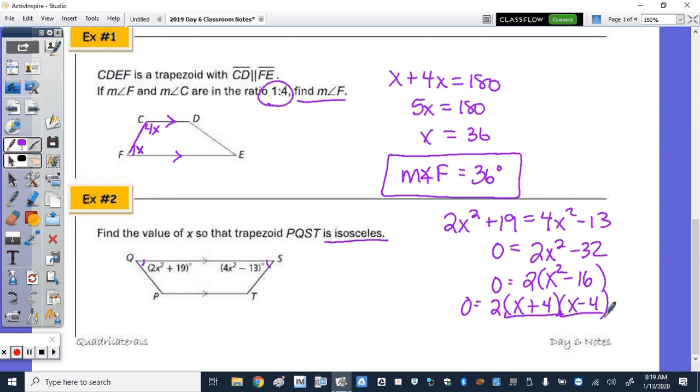we get zero equals 2 times X plus 4 times X minus 4. And looking at those factors, I know my roots are negative 4 and 4. Now back in the question, because we are squaring, whether we square negative 4 or positive 4, we get the same answer, 16. So in this case, we do not have to reject the negative. X can be equal to positive or negative 4.